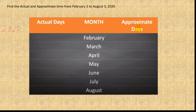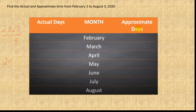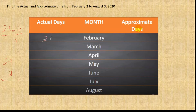Since 2020 is divisible by 4 with no decimal, it is a leap year, so we use 29 days for February. We subtract the starting date: 29 minus 2 equals 27 days remaining in February. Then March has 31 days, April is 30, May is 31, June is 30, July is 31, and August has only 3 days.